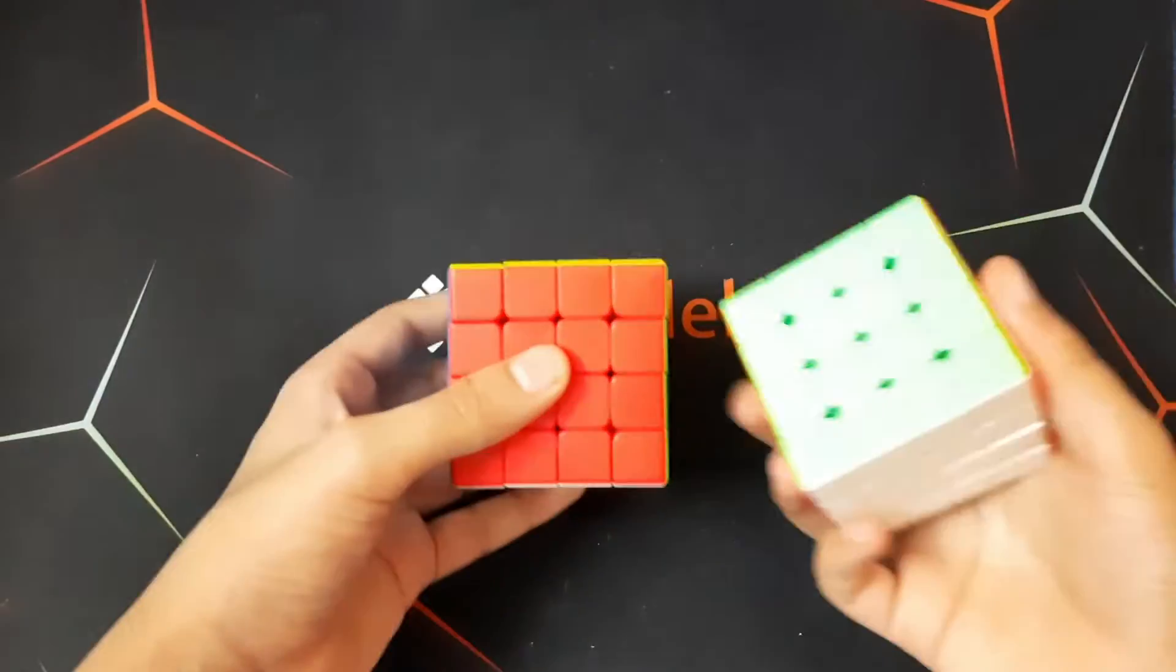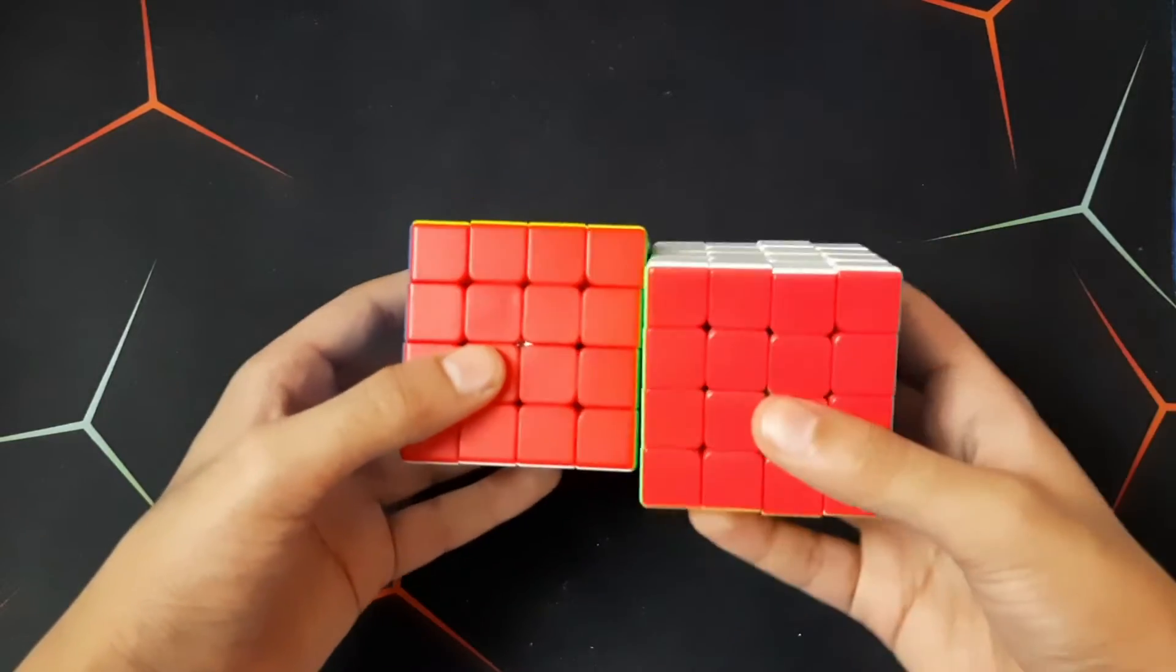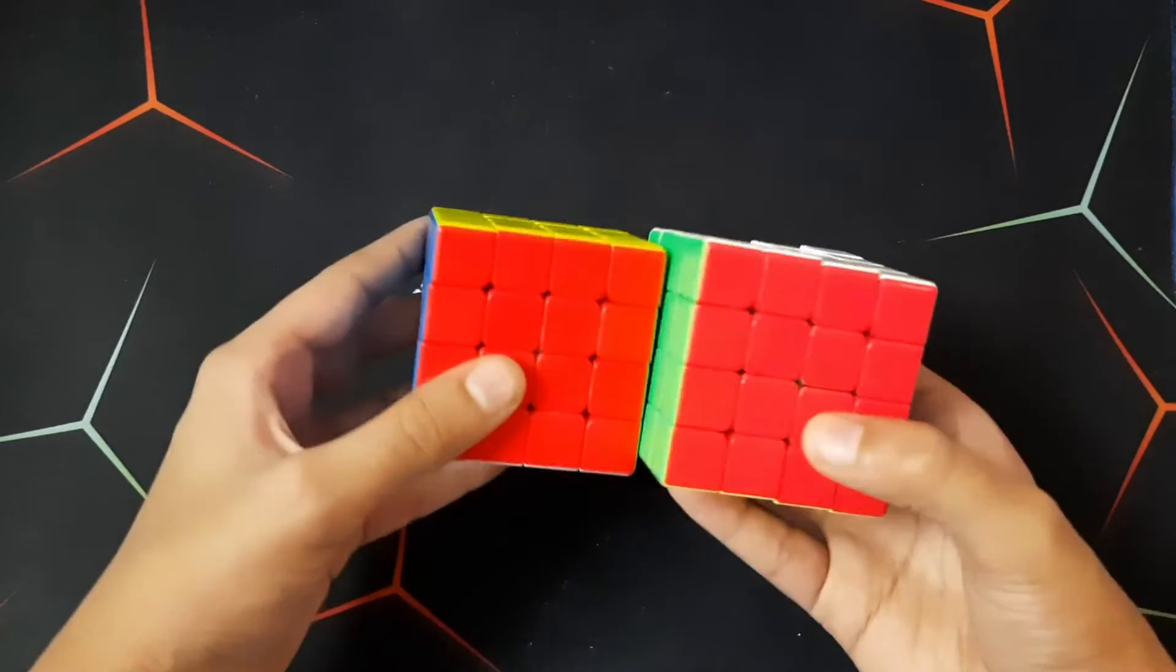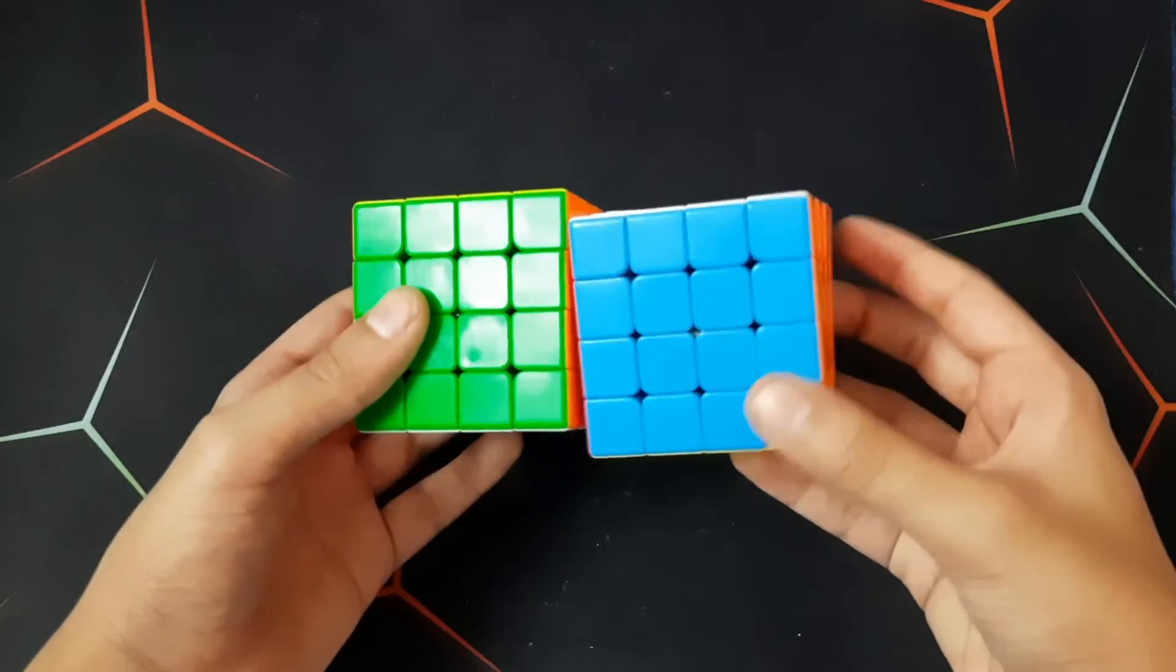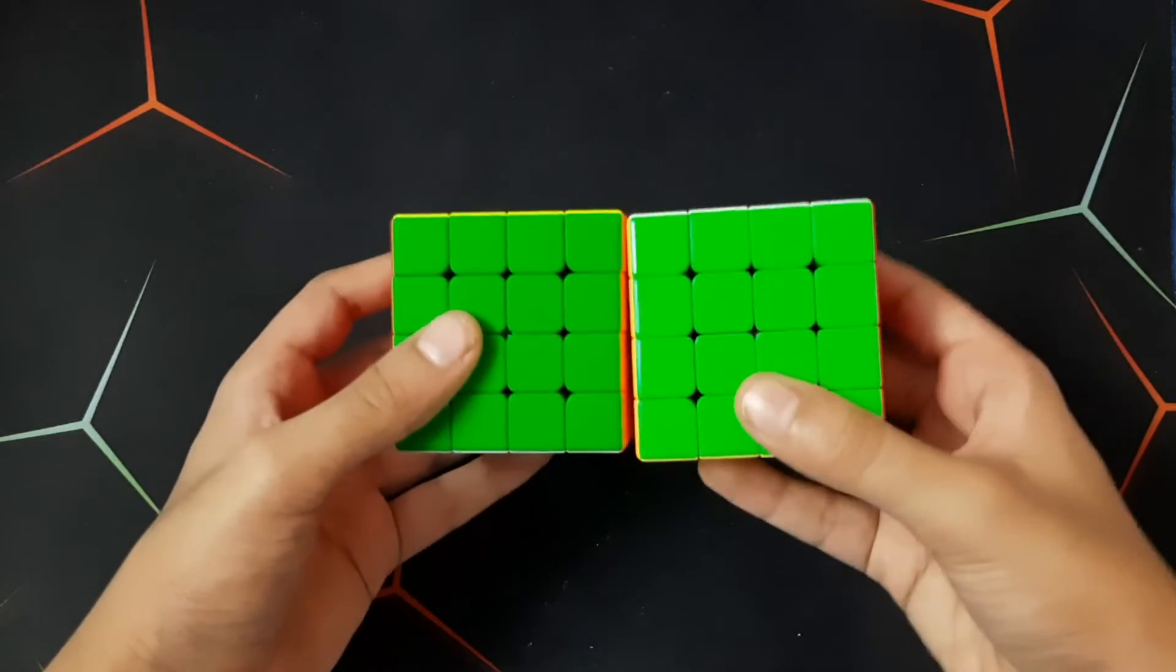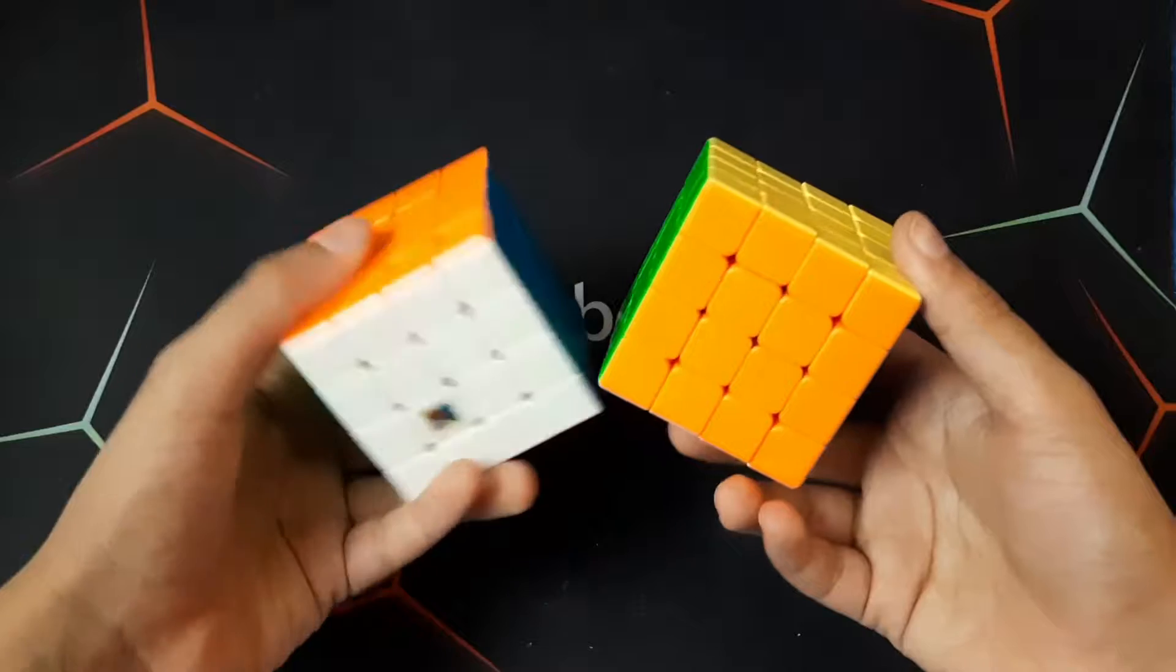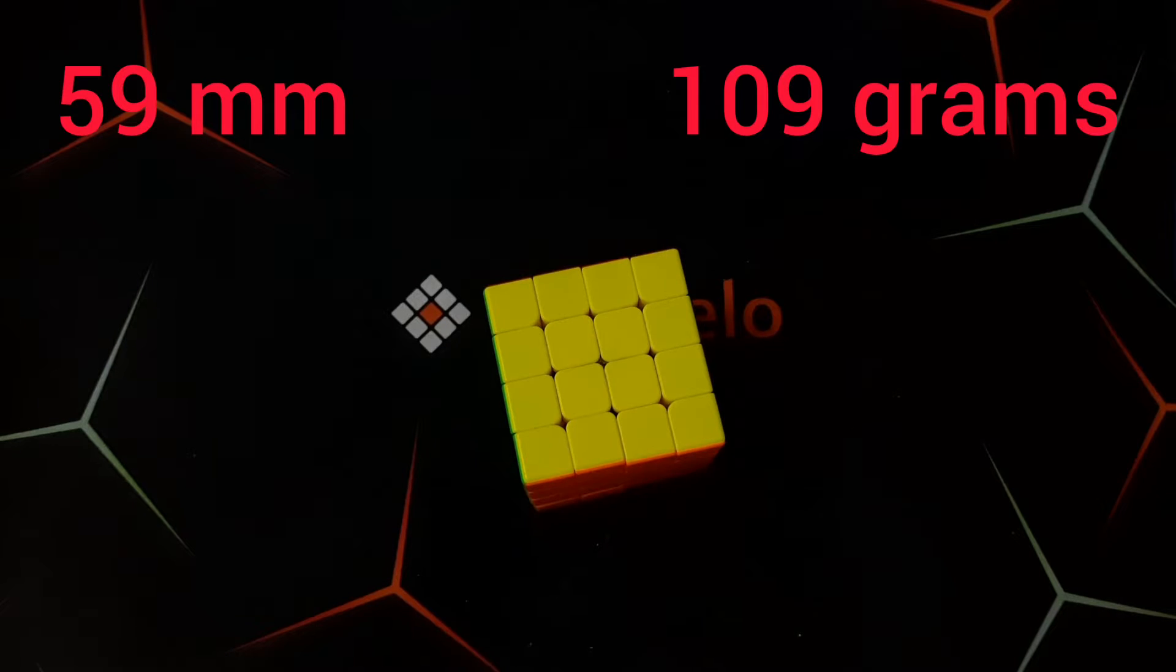So on the Melong 4x4, the shades are very, very better. It's very good. As you can see, the Melong 4x4 shades are better than the regular Melong 4x4. Check out the specs of the cube if you need it.